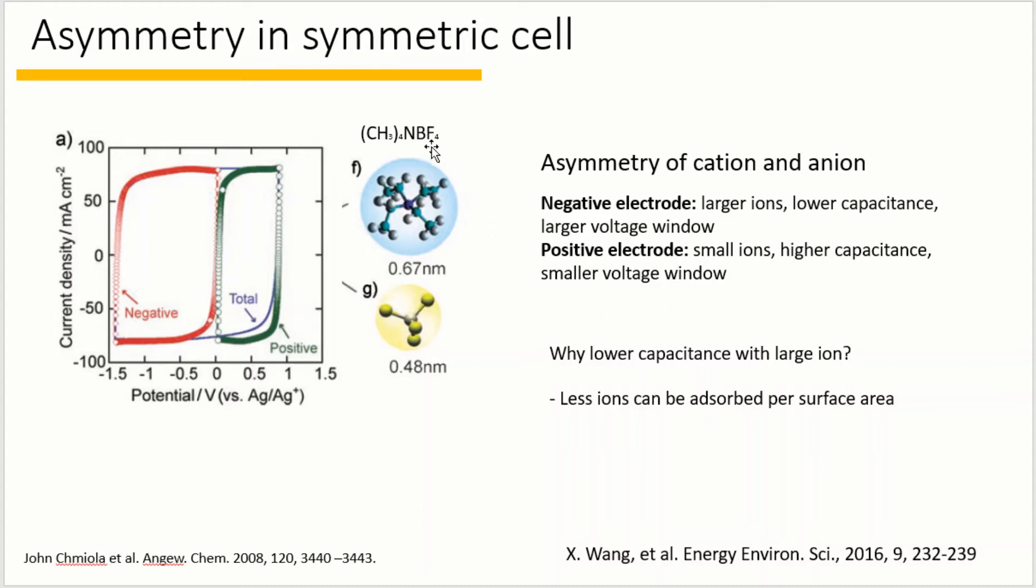However, because the tetramethylammonium is much larger than the tetrafluoroborate, the capacitance of the negative electrode should be smaller than the positive electrode. That is because less ions can be adsorbed per surface area when the ion size is larger. If you are interested to know more about the capacitance determining factor, you can refer to this paper.